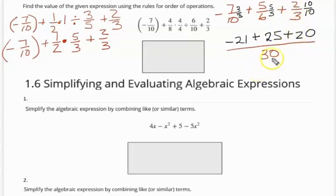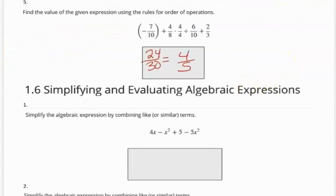So I then get a negative 21 and a positive 45. That leaves me with 24 thirtieths. But they want that reduced to its simplest term. I can take a 6 out of each one. And this becomes 4 fifths. Okay, let's go on to our next part.